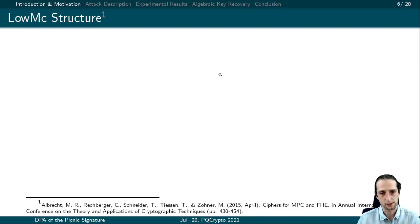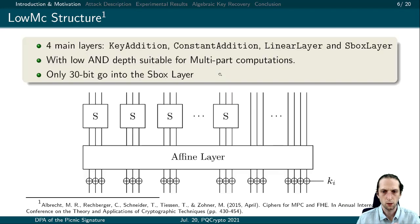Let's start with the symmetric key primitive of Picnic signature, which is LowMC block cipher. When we go into the details of the block cipher, we see a very simple structure. Here we can see the picture taken from the LowMC documentation. It has four main layers: key addition, constant addition, linear, and S-box layer.